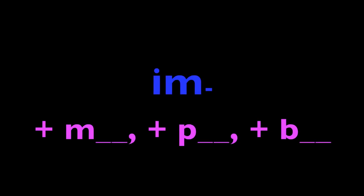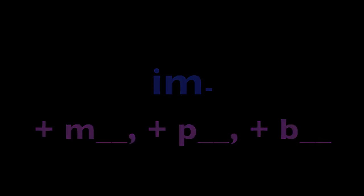Let's look at the IM prefix. We put IM before words starting with M, P and B. Mature — immature. Perfect — imperfect. Balance — imbalance.